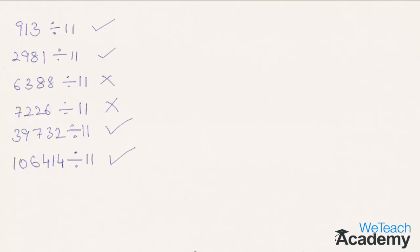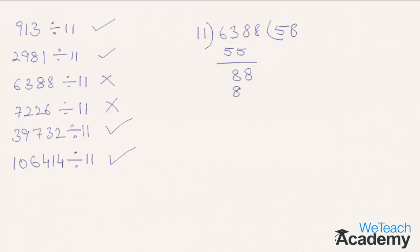Coming to the next example, which is 6388 divided by 11. 11 times 5 is 55, and we get 8 here. Bringing down the next digit 8, it is 88, and 11 times 8 is 88. Bringing down the next digit 8, we get remainder 8. So the given number is not divisible by 11.